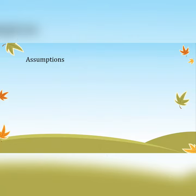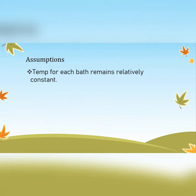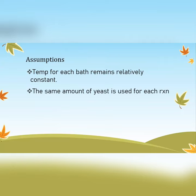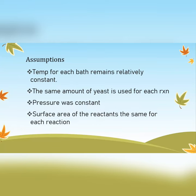For assumptions: we assume the temperature for each water bath remains relatively constant. We also assume the same amount of yeast is used for each reaction — bearing in mind you could have dead yeast affecting this. We assume pressure is constant, and that the surface area of the reactants is the same for each reaction, since surface area affects the rate of reaction. We assume no powder clumping or variation in surface area between reactions.